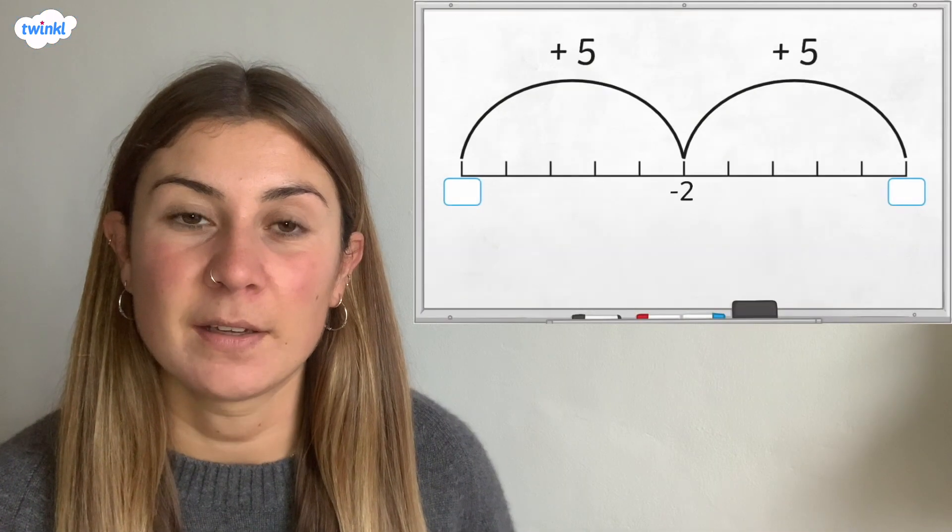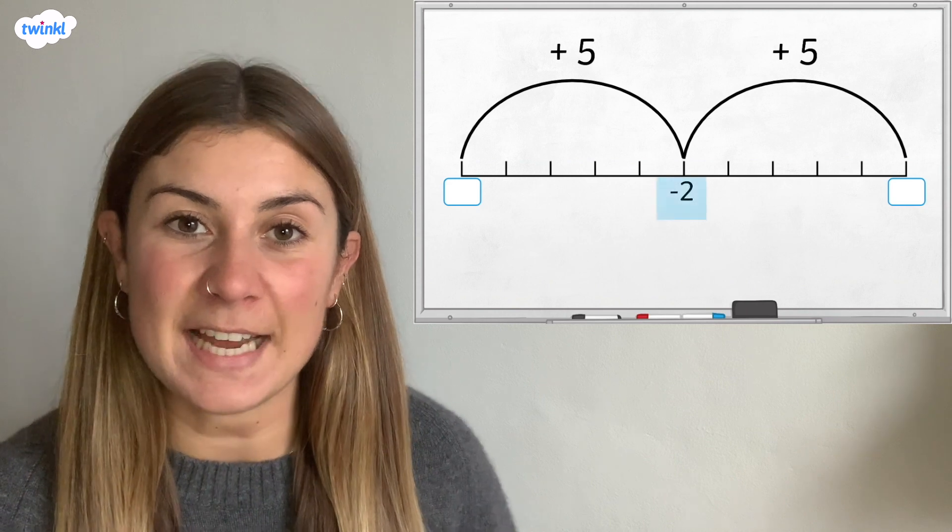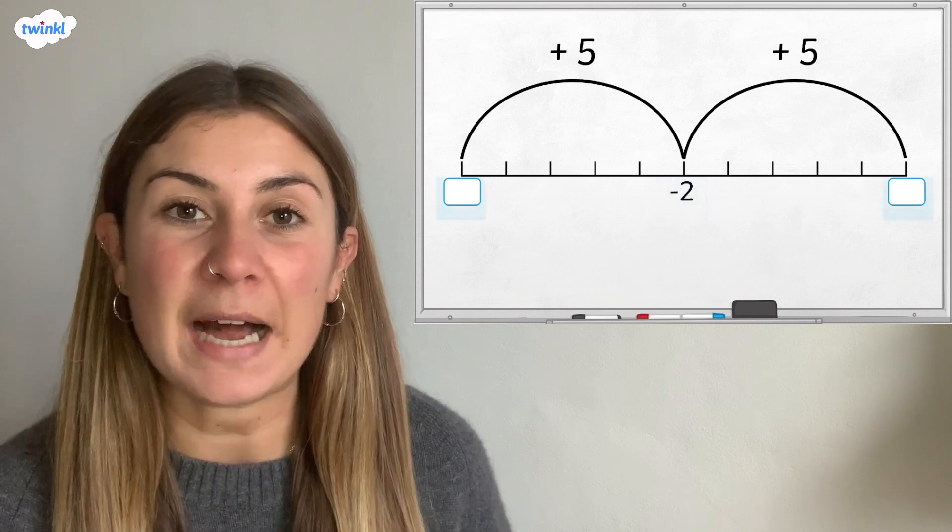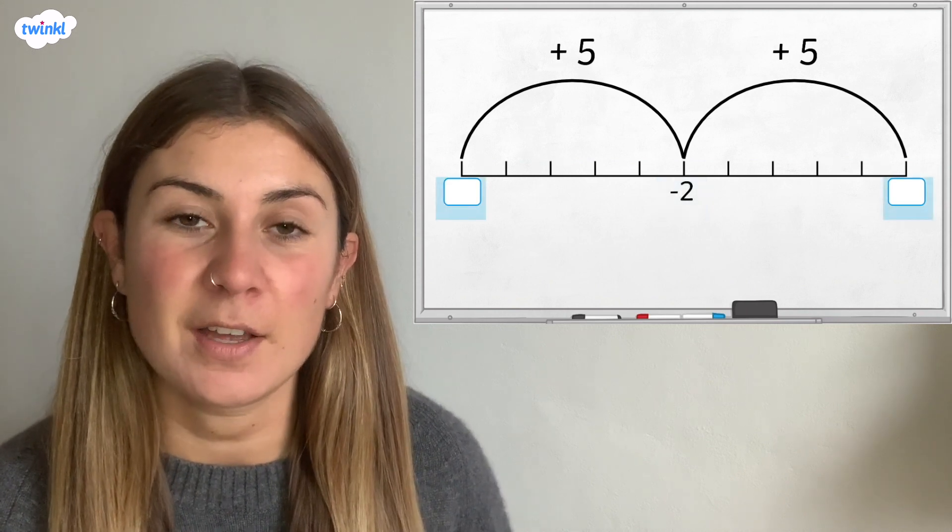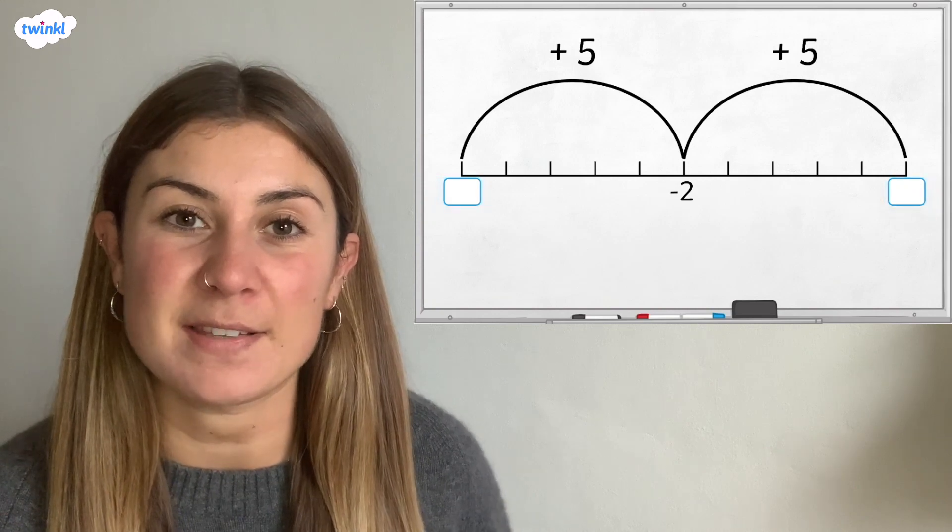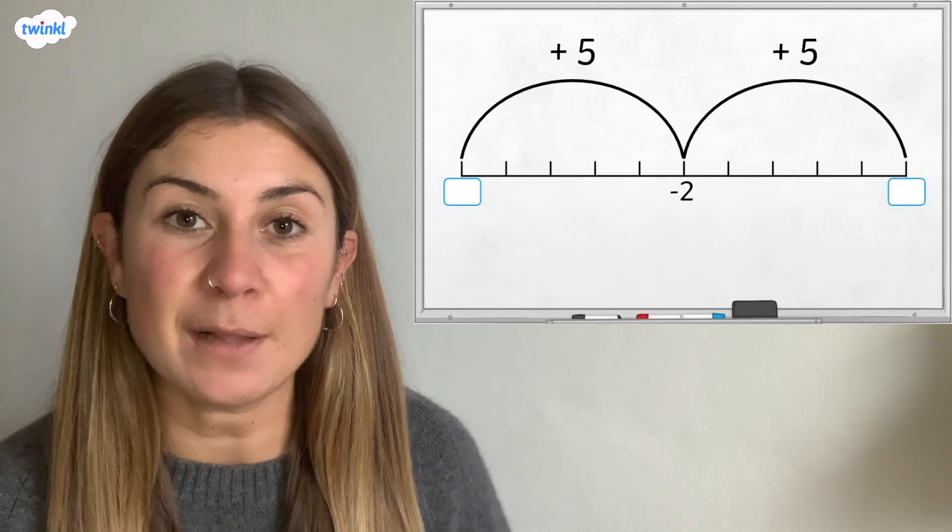Have a look at this number line. We know that this number is negative 2, but we need to work out what the two missing numbers are. Pause the video here to work out your answer. You could draw the number line to help you find the answer.